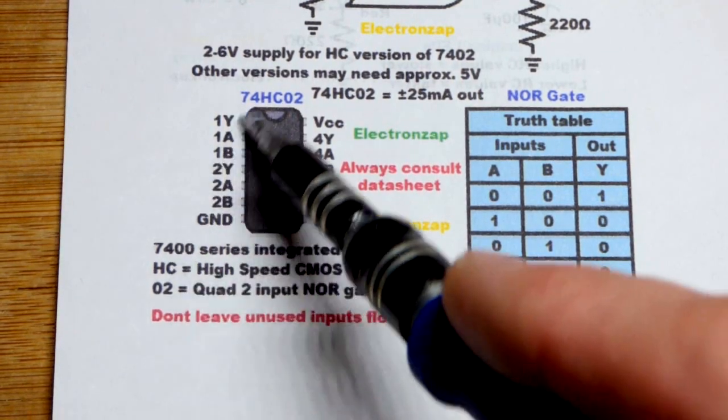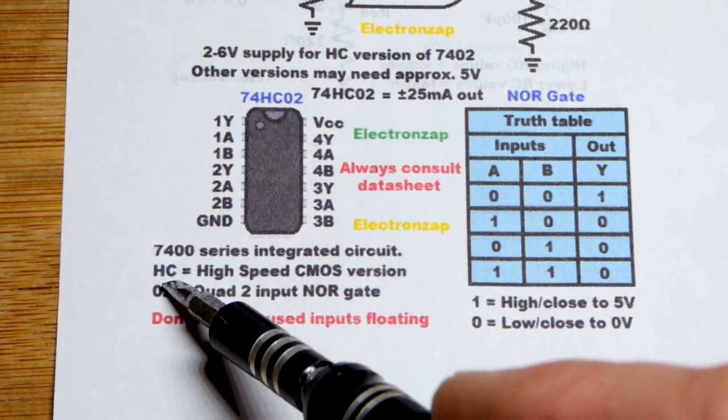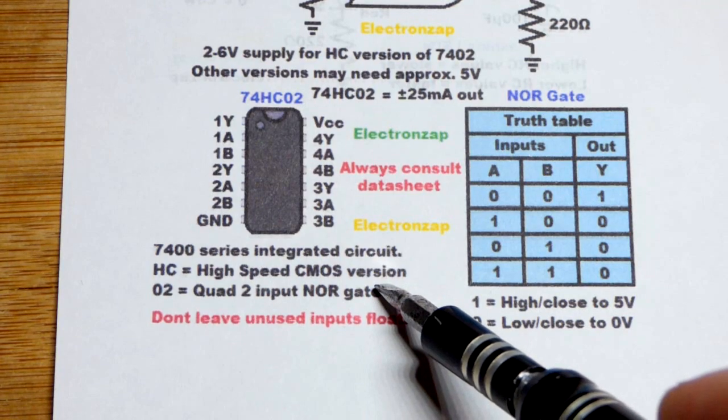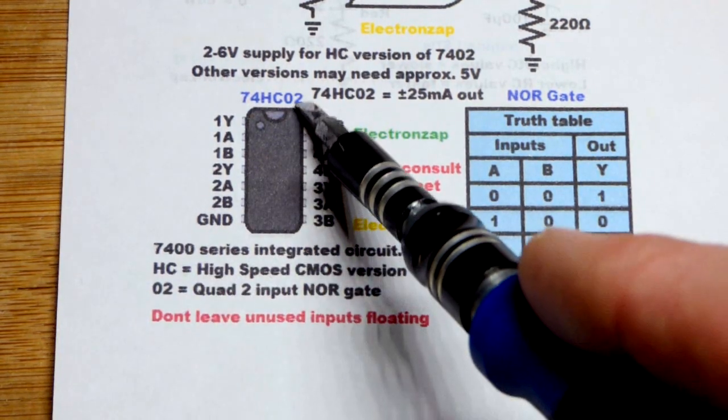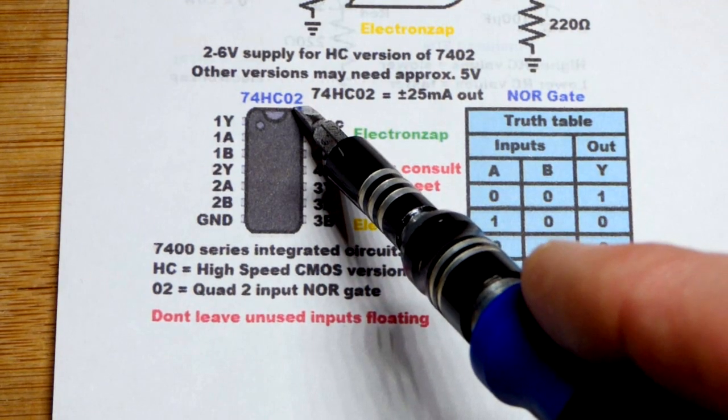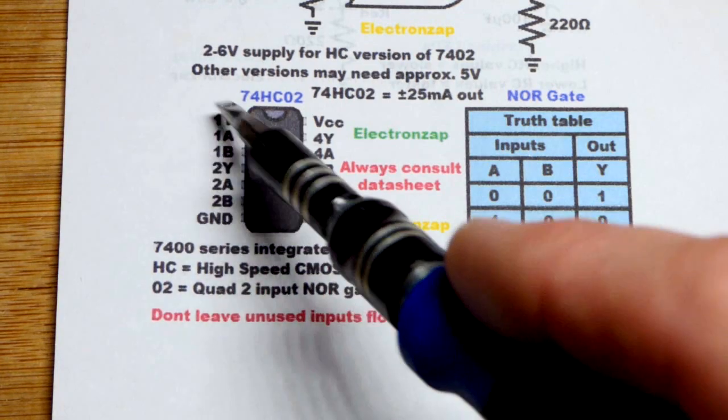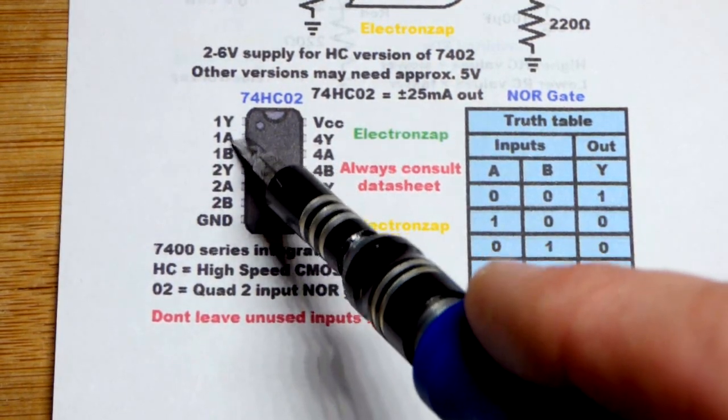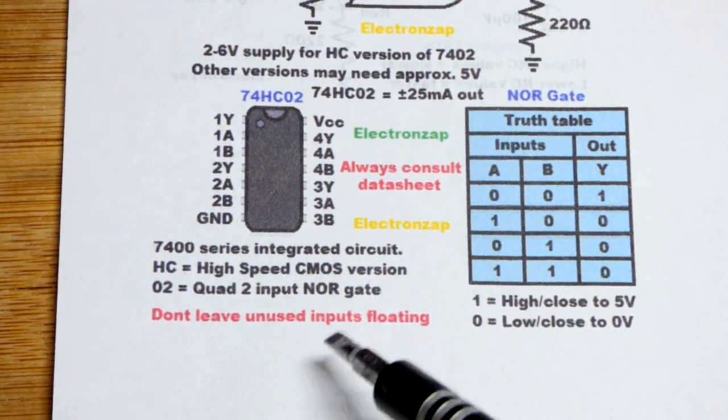7400 series integrated circuit, that's what the 74 is. And it may or may not have letters, but the high speed CMOS version is the main one right now. So you'll see that a lot, 74HC, and then 02, the last two digits, let you know the type of integrated circuit that is on there. So it's quad, there's four of them, 1, 2, 3, and 4, two inputs, so input A and B, NOR gates. And we already talked about the NOR gates.